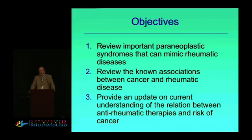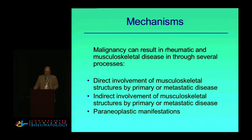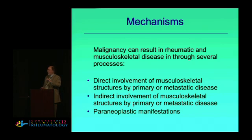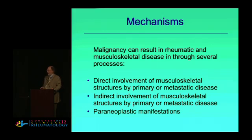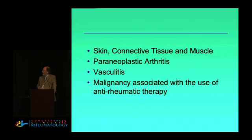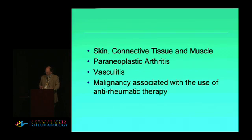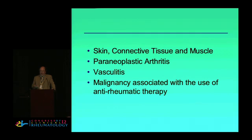I'm going to touch on known associations between cancer and rheumatic disease and then provide an update on the current understanding of the relationship between our treatments and risk of cancer. We may see rheumatic disease as a result of indirect or direct involvement. The paraneoplastic process is really defined as no appreciable direct effect of a tumor cell, but as a result of circulating mediators — maybe endocrine, neurocrine, et cetera. I'm going to take a top-down approach to go through some key manifestations, starting with the skin and then working down through the connective tissues, ending with more systemic disease, and then we'll get to rheumatic therapies in relation to cancer.